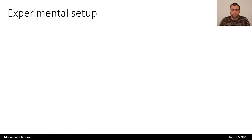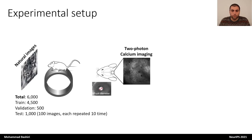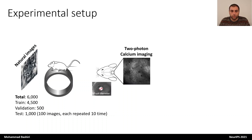But before we talk about the model, let me briefly tell you about the data that we use in the project. We are recording neural activity via two-photon calcium imaging while the mouse is running on a treadmill and looking at natural images. In one recording session, we show about 6,000 natural images in total, and we also record behavioral variables such as pupil dilation simultaneously.